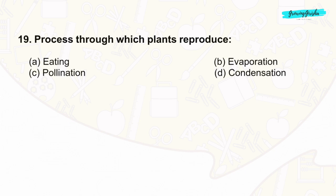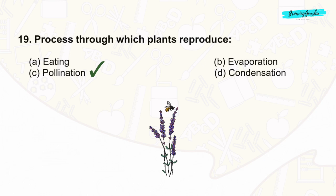Question 19: The process through which plants reproduce is pollination. Pollination is the process in which pollen from the anther is transferred to the stigma of the same or a different flower, leading to fertilization and production of seeds. The correct answer is option C: pollination.